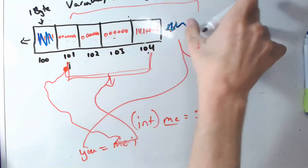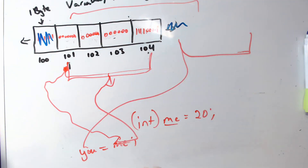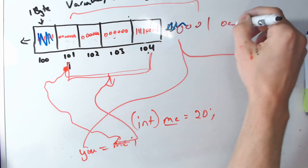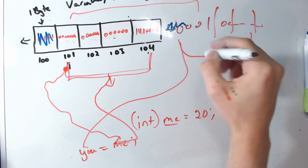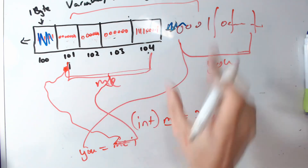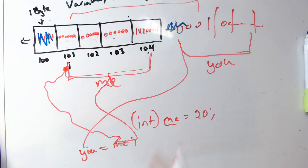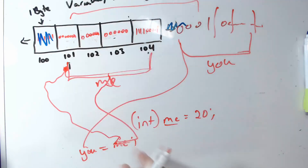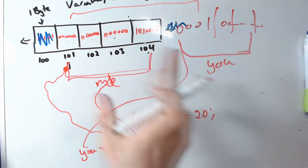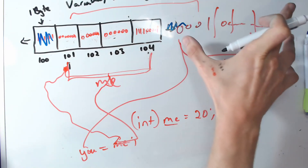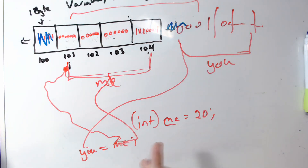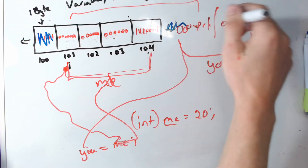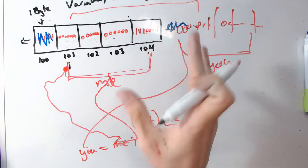It actually makes a copy of that information in another four spaces of memory. So now 'you' and 'me' are separate — they both hold the same value but in different memory locations. Unlike C++ where you could use pointers to make two variables point to the same address, in Game Maker it just makes a copy. So if you change the value of 'you', it changes over there but doesn't affect 'me'.